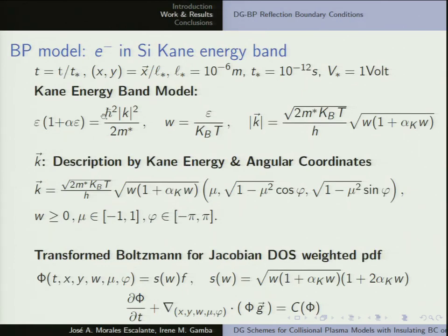For the details, we use a given energy band model — it's an analytical model. If alpha equals zero, this would be the velocity as used in plasmas, proportional to k-squared, so the energy would be like the kinetic energy. You have this energy normalized, and the momentum description maps into the energy variable, which is related by this analytical model to the norm of the momentum, plus some angular variables which give the direction — so it's energy and angles for the momentum.